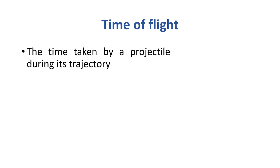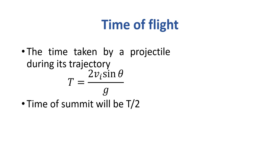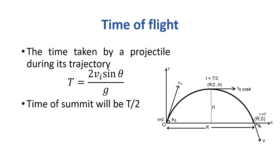Next, time of flight. Definition: the time taken by a projectile traversing its trajectory is known as time of flight. Formula: T = 2vi sinθ / g. The time of summit — i.e., the time to reach the highest point — is T/2, since the highest point is in the middle of the projectile's path.